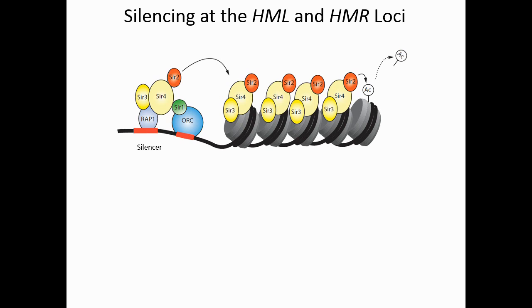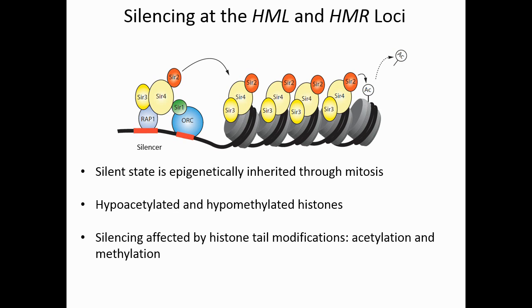A couple of other aspects about HML and HMR worth pointing out: the silent state is epigenetically inherited through mitosis, and the silent state is intimately connected to different histone modifications, particularly histone methylation and histone acetylation. In the silent form, these regions are hypoacetylated and hypomethylated on their histones. But silencing—the establishment and maintenance of silencing—is influenced by different histone tail modifications, particularly acetylation and methylation.